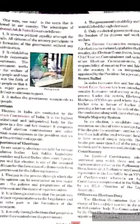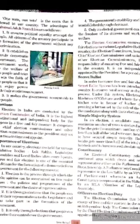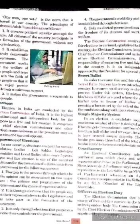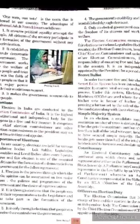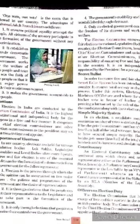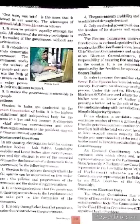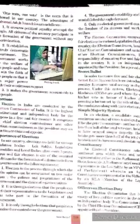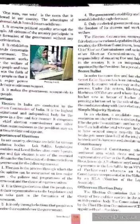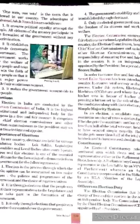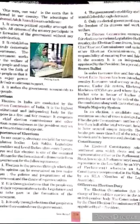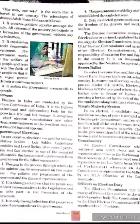Right to Vote. In a democracy, election is the most important thing. People elect their representative who in turn forms the government, makes laws and rules the country. In a democratic country like India, the right to vote is granted to all adult citizens of the country aged 18 years and above, irrespective of caste, creed, religion, race, language, etc.